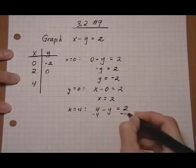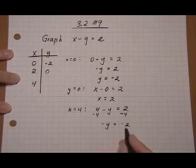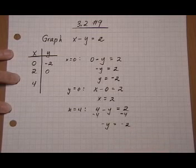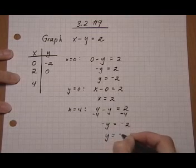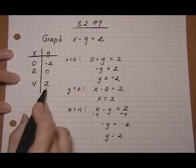Take away four on both sides, we get negative y equals minus two. Divide both sides by a negative and we get y equals two. When x is four, y is two.